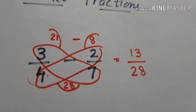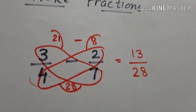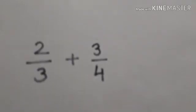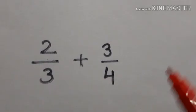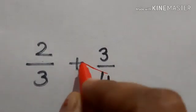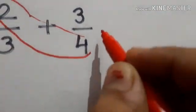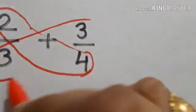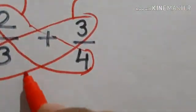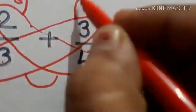Let us solve another one. It is a plus sign. First of all, I am going to make the butterfly like this. Four twos are eight, I will write here. Three threes are nine.